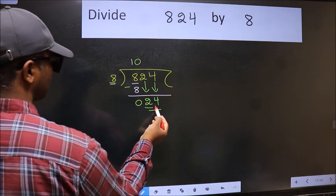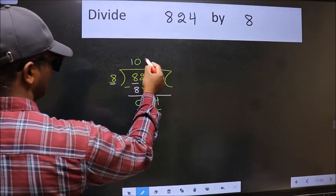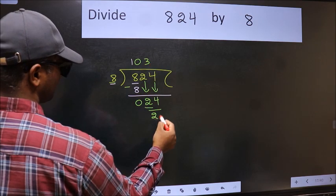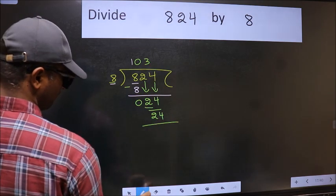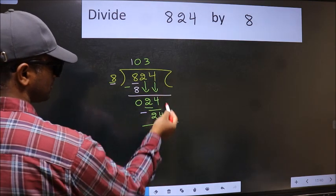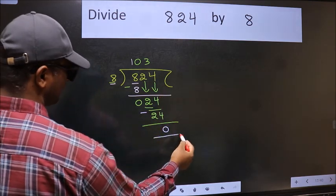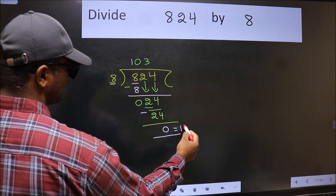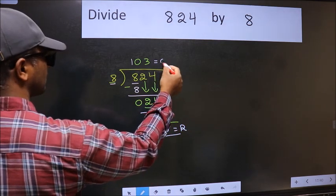When do we get 24 in the 8 table? 8 times 3 is 24. Now we should subtract. We get 0. No more numbers to bring down, so we stop here. This is our remainder and this is our quotient.